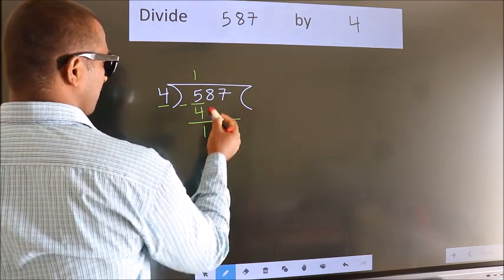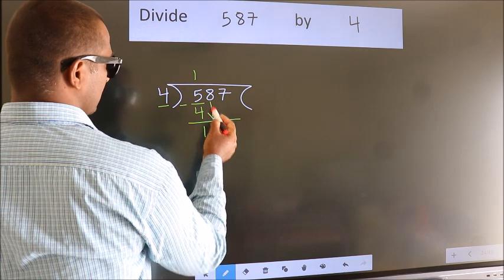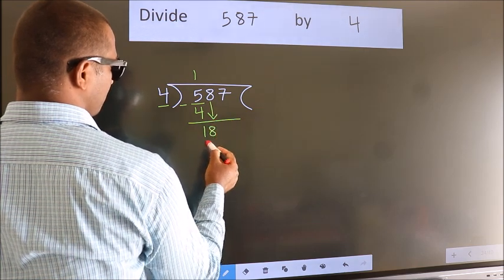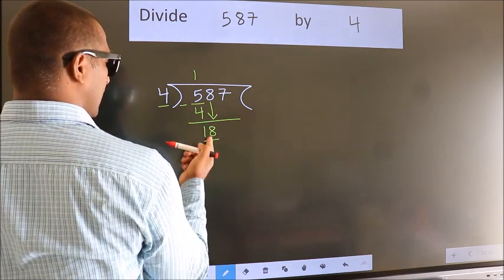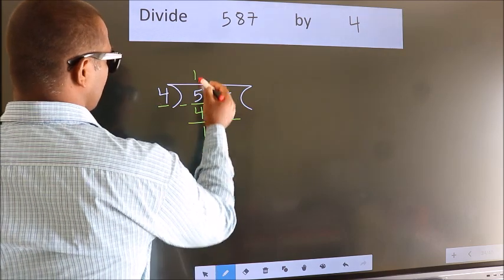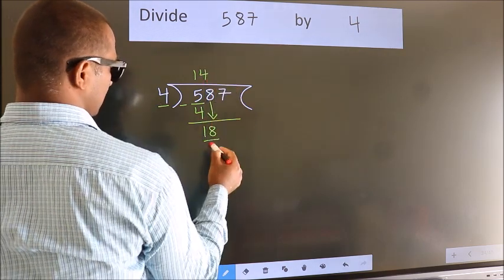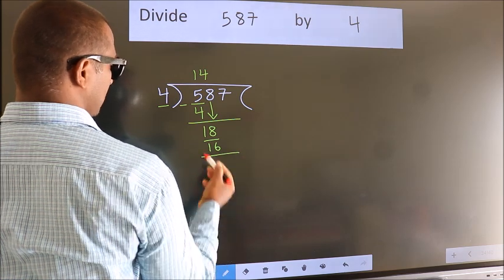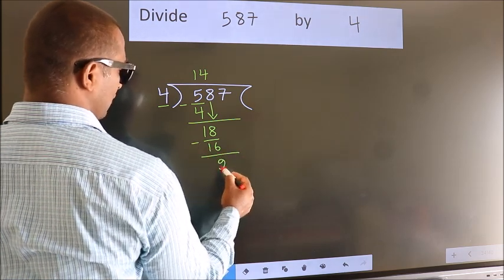After this, bring down the beside number. So 8 down. So 18. A number close to 18 in 4 table is 4 fours 16. Now we subtract. We get 2.